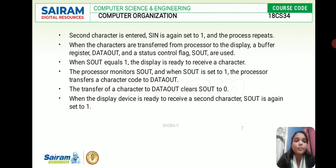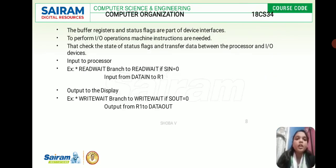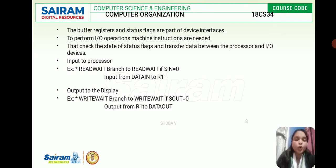The processor monitors SOUT, and when SOUT is set to one, the processor transfers a character code to data out. The transfer of a character to data out sets SOUT to zero. When the display device is ready to receive a second character, SOUT is again set to one. The buffer registers and status flags are part of device interfaces. To perform input and output operations, machine instructions are needed to check the state of status flags and transfer data between the processor and input/output devices. For example: read — wait, branch to read-wait if SIN equals zero, input from data in to R1; and for output to display — write-wait, branch to write-wait if SOUT is zero, output from R1 to data out.